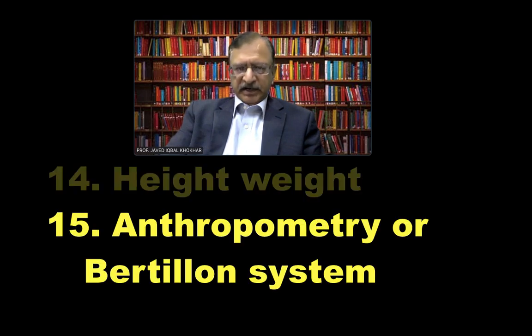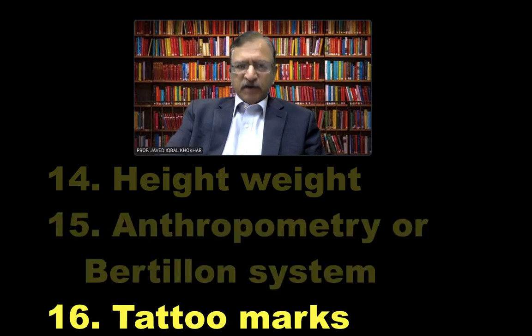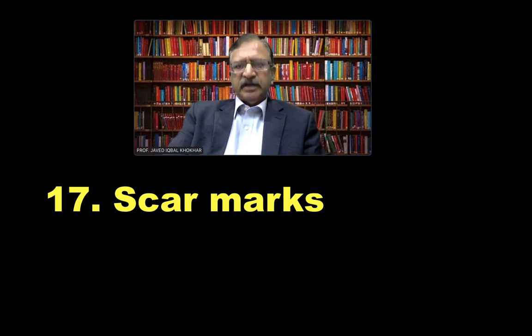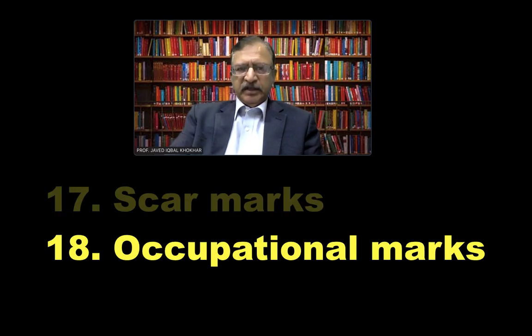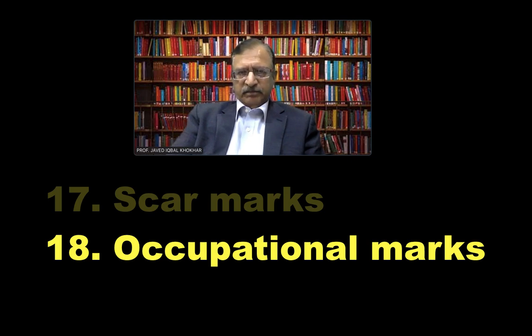The height and weight index, the anthropometry or the Bertillon system, which is the measurement of various parts. And the tattoo marks — we can study tattoo marks if somebody has got tattoos, and it can help us in identification. Then various scar marks — scar marks of disease, injury, or some therapy or operation — can help us in identity. Then the occupational marks — the marks which are gathered by certain occupations like the driver, the cobbler — any occupational marks that can help.